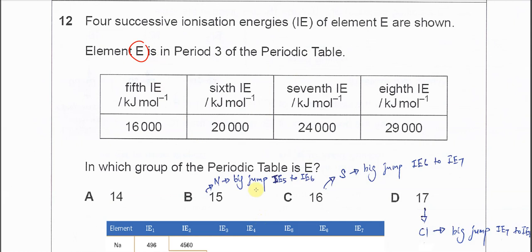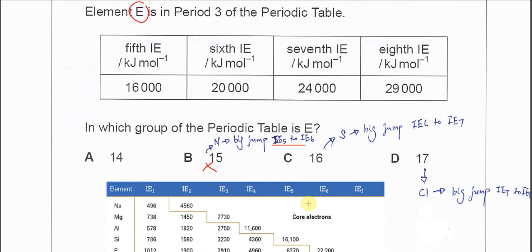We should see a big jump between the fifth and sixth ionization energy. Since there's not really a big jump between the fifth and sixth IE, the answer is not B, group 15.